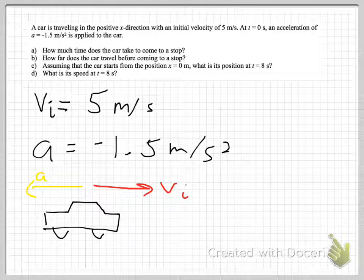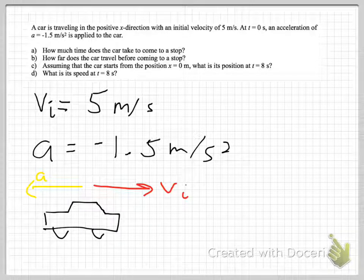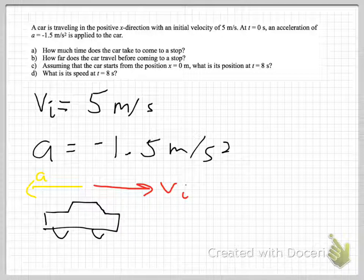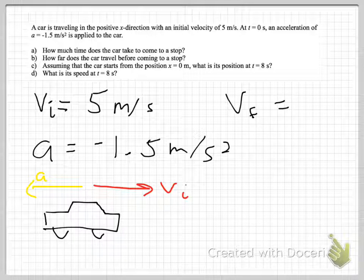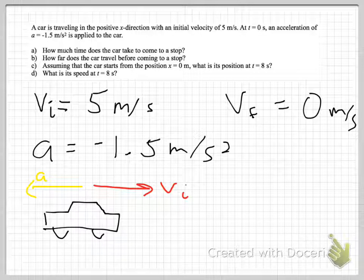For Part A — how much time does the car take to come to a stop? — I know something else. The initial and final subscripts I'm using are user-selectable. This is the initial velocity as long as I care about what the car is doing when I start the stopwatch. When I stop caring about the car for Part A is when it comes to a stop. So I also know the final velocity, for Part A and Part B, is 0 meters per second.